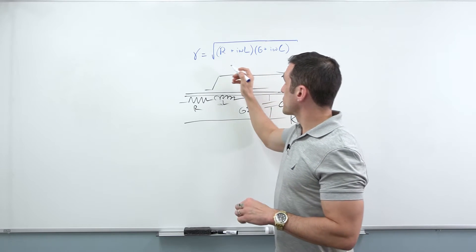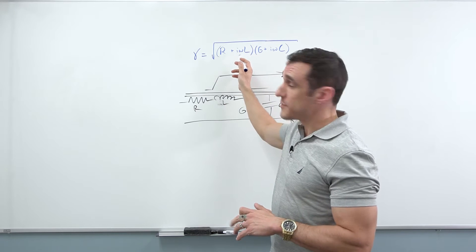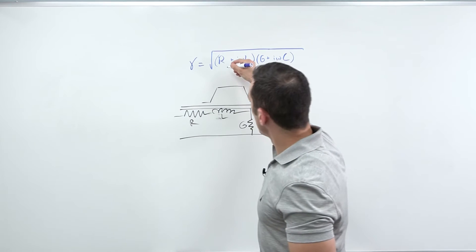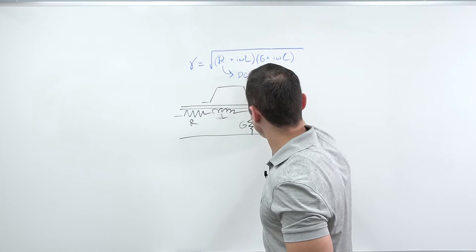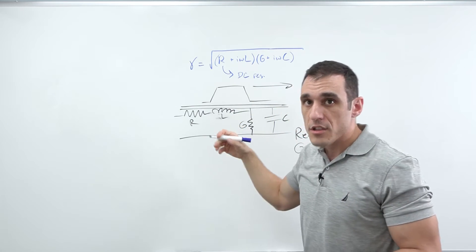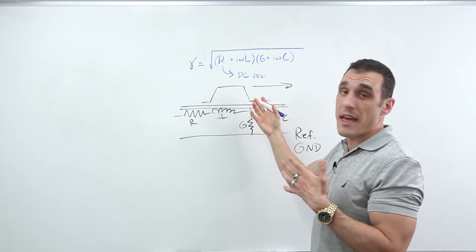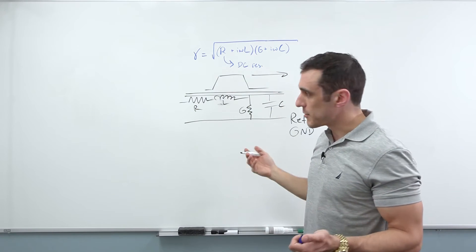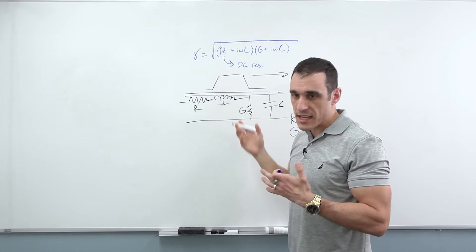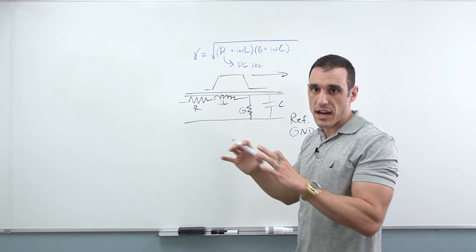So first we need to look at what these different terms in this equation actually mean. So this R right here is a DC resistance. So by definition, it doesn't really depend on frequency. Now here, this L we like to normally think of L the inductance as just being a fixed value over the entire frequency range, but that's not actually correct.